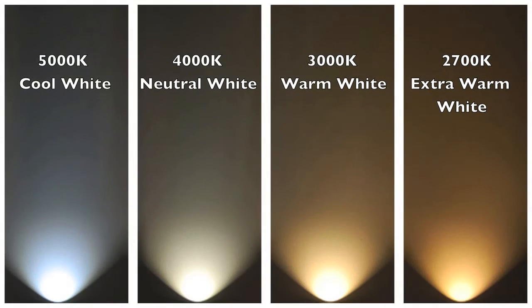LEDs run cool — even after being on for many hours you won't burn yourself touching them. Another improvement LED PAR lamps have over their old incandescent cousins is that you can now choose the color temperature of the bulb you want. Essentially, the type of white light can be chosen with LED, from a warm 3000K to a neutral 4000K to a cool 5000K.